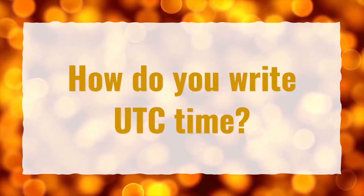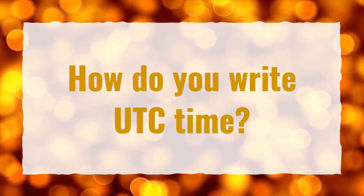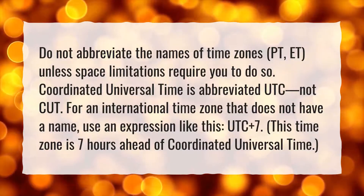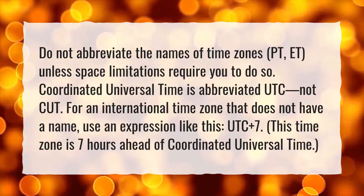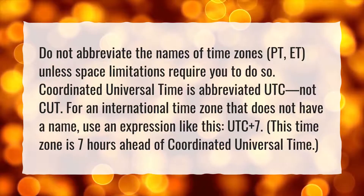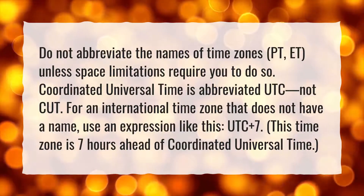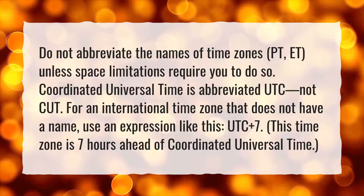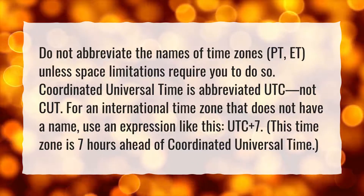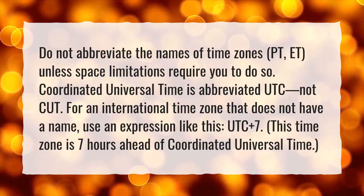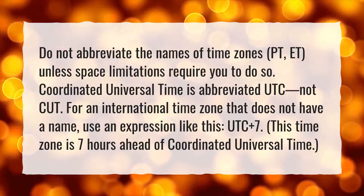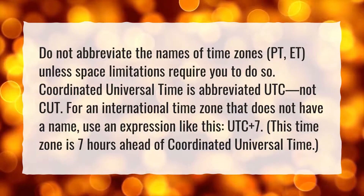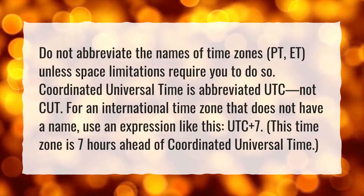How do you write UTC time? Do not abbreviate the names of time zones, such as PT or ET, unless space limitations require you to do so. Coordinated Universal Time is abbreviated UTC, not CUT. For an international time zone that does not have a name, use an expression like UTC plus 7. This time zone is 7 hours ahead of Coordinated Universal Time.